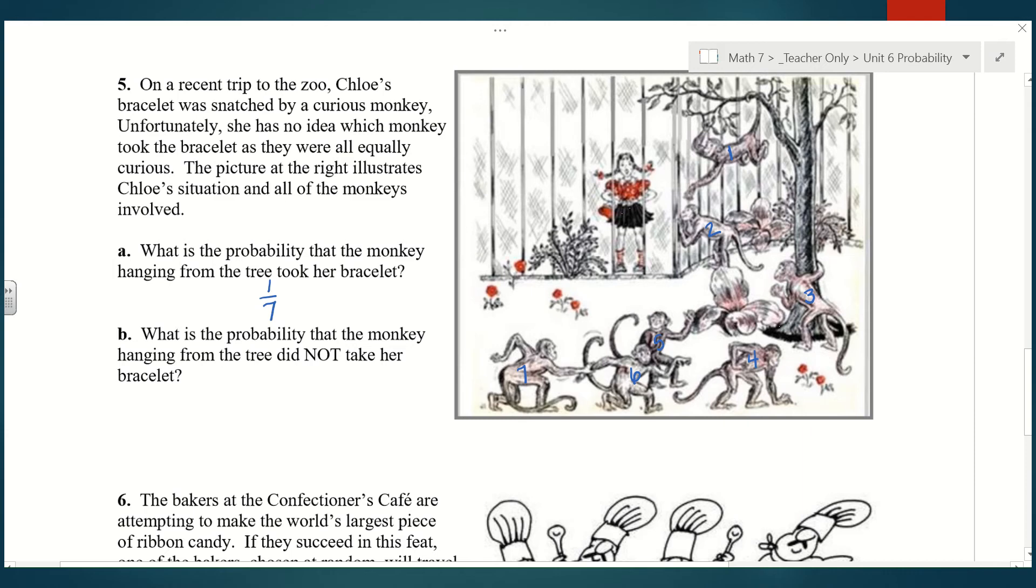What is the probability that the monkey hanging from the tree did not take her bracelet? If you remember, we call this the complement. If we're asking in part A which of the monkeys hanging from the tree took the bracelet and it's 1/7, the opposite or complement would be 6/7. Remember that's like saying 1 minus 1/7, what's left? 6/7.